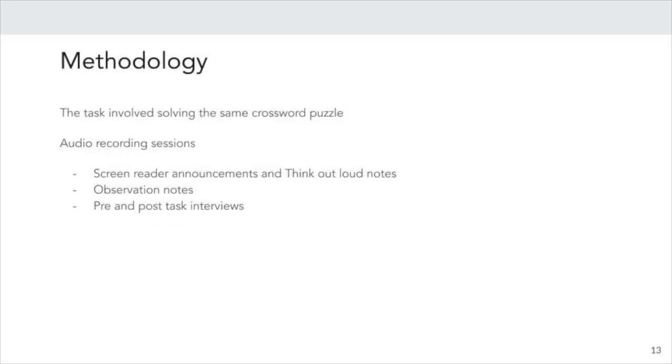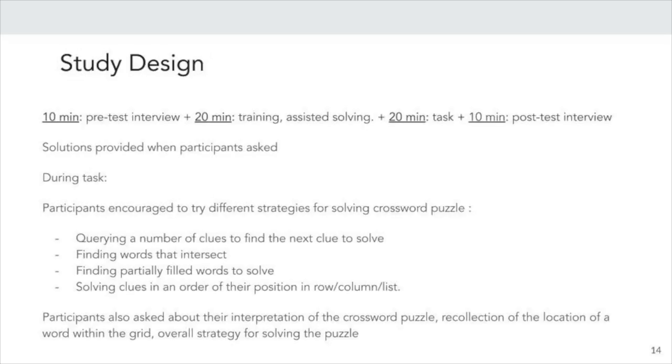The task involved solving the same crossword puzzle on the system that was assigned to the participant. Audio was recorded during each session and the facilitator took down observation notes. Each one-hour session consisted of a pre-test interview followed by 20 minutes of training to introduce the interactions and sometimes also explained the rules to participants who were new to crossword puzzles. We also solved a few clues with them as part of assisted solving session.